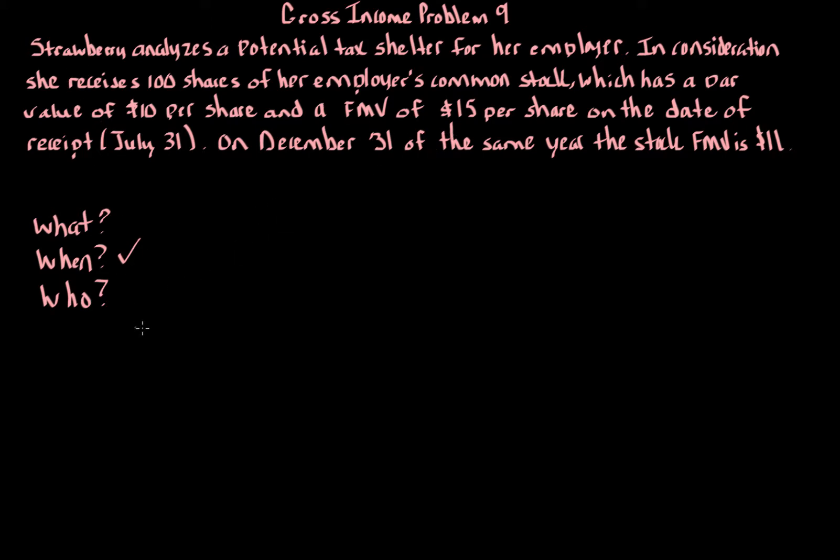Who? We're looking at strawberry specifically. We're not worrying about the corporation paying. We're dealing with gross income to strawberry. For the what amount, we've got to focus on the definition of gross income. Looking at the code, section 61 says income from whatever source derived, very broad definition.